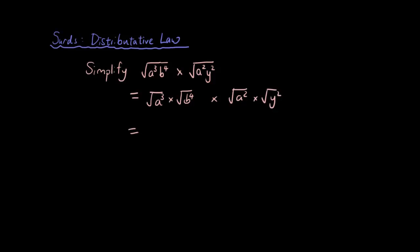I'm further separating the square root of a³ into the square root of a² times the square root of a, times the square root of b⁴, which is just b², times the square root of a², which is just a — because 2 divided by 2 is 1 — and 2 divided by 2 is 1, so times y.